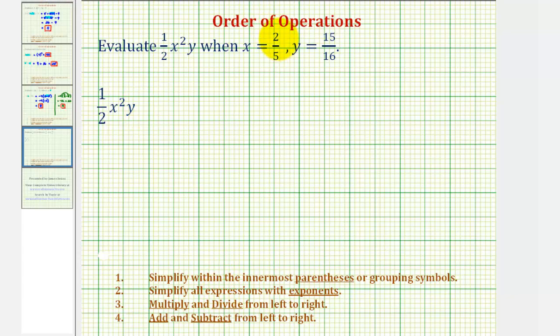So we'll first substitute two-fifths for x and fifteen-sixteenths for y, which would give us one-half times two-fifths squared times fifteen-sixteenths.